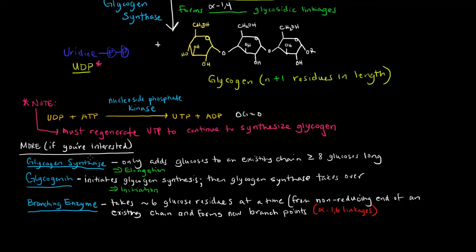So a little bit more if you're interested. Glycogen synthase, we just mentioned this, it only adds glucoses to an existing chain, and that existing chain has to be at least eight glucoses long. So glycogen synthase is involved in the elongation of an existing glycogen chain. How does it begin? Well, that's where glycogenin comes in. Glycogenin generates glycogen. So it actually initiates glycogen synthesis. After it initiates glycogen synthesis, then glycogen synthase takes over to elongate. So glycogenin is really just involved in initiation.